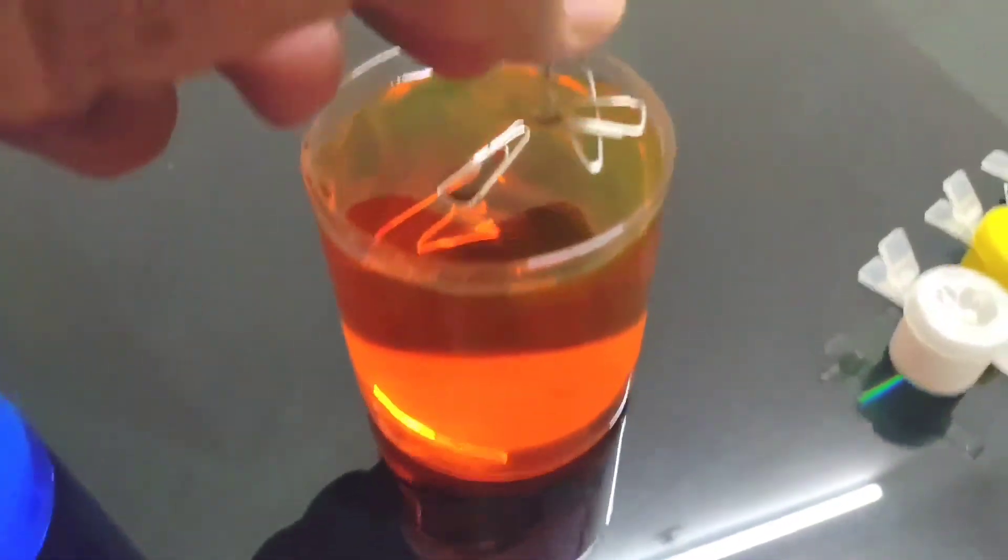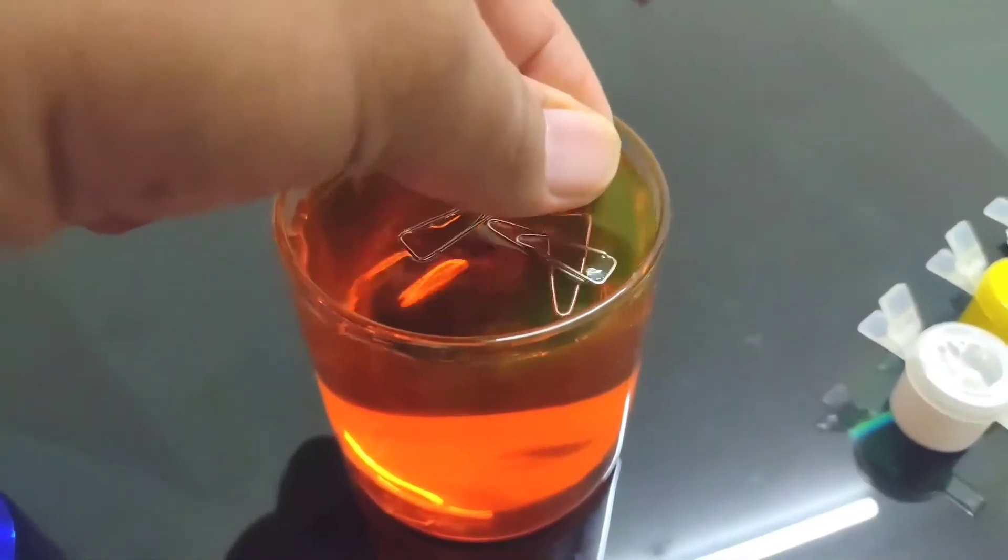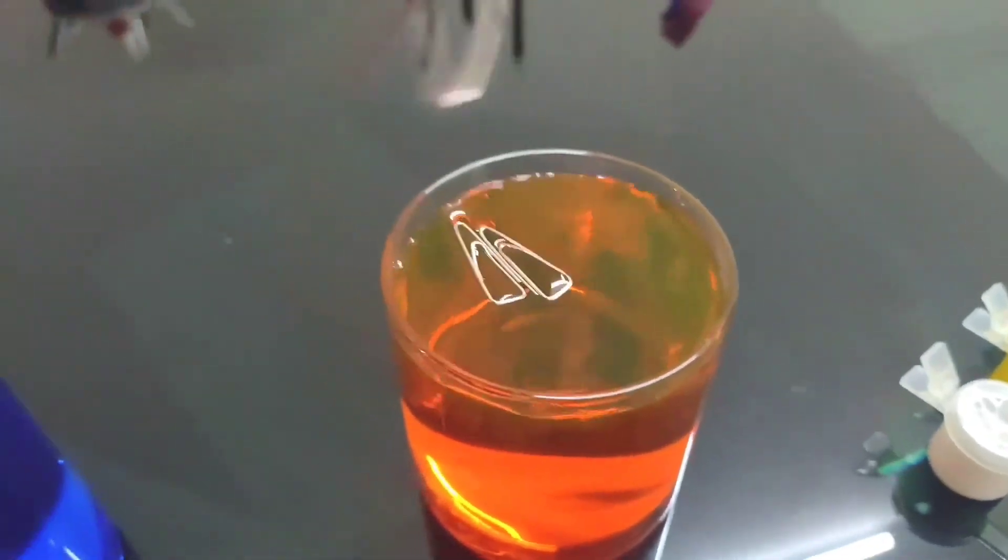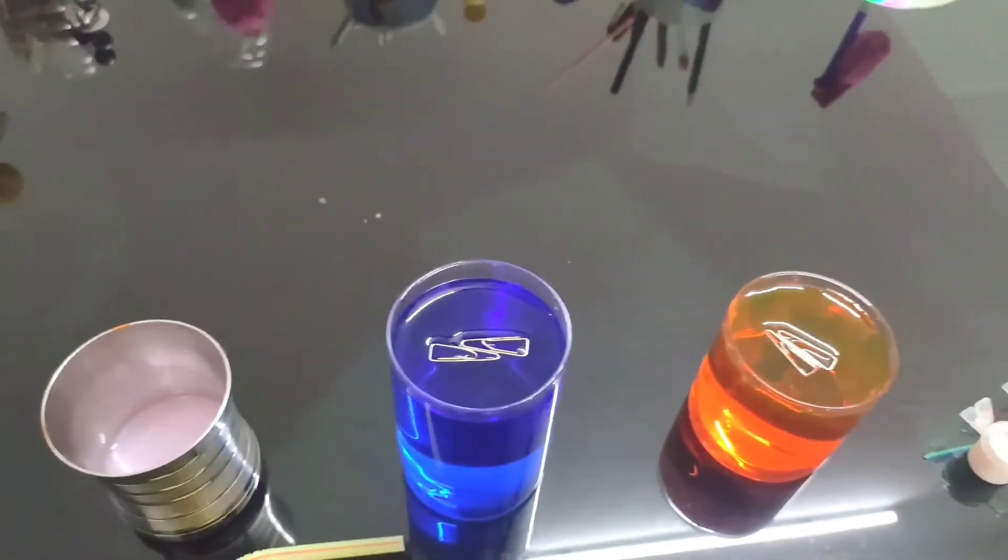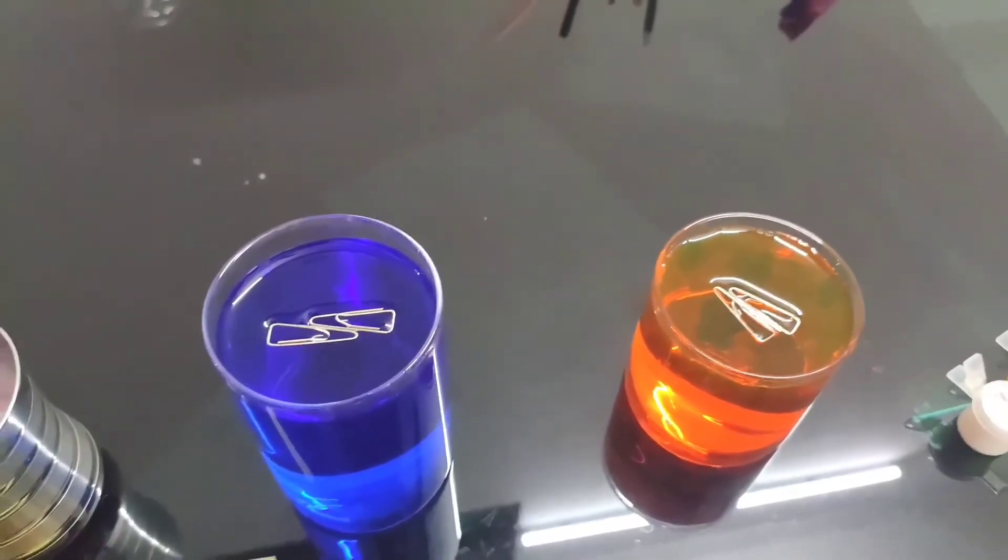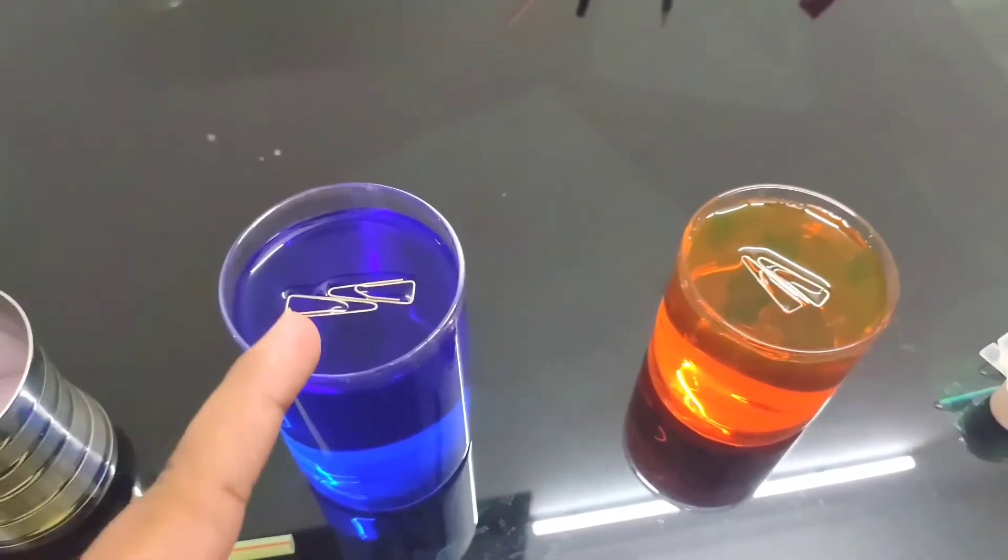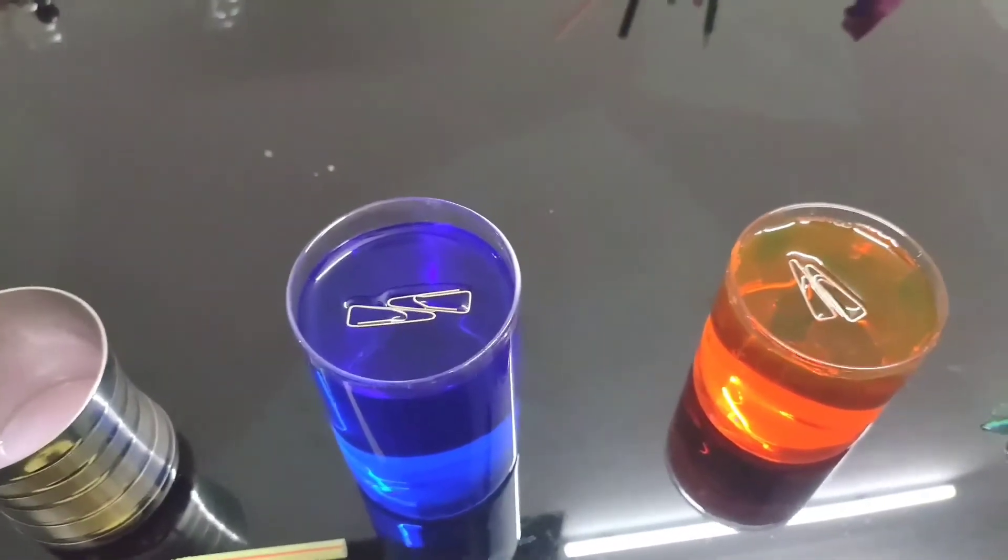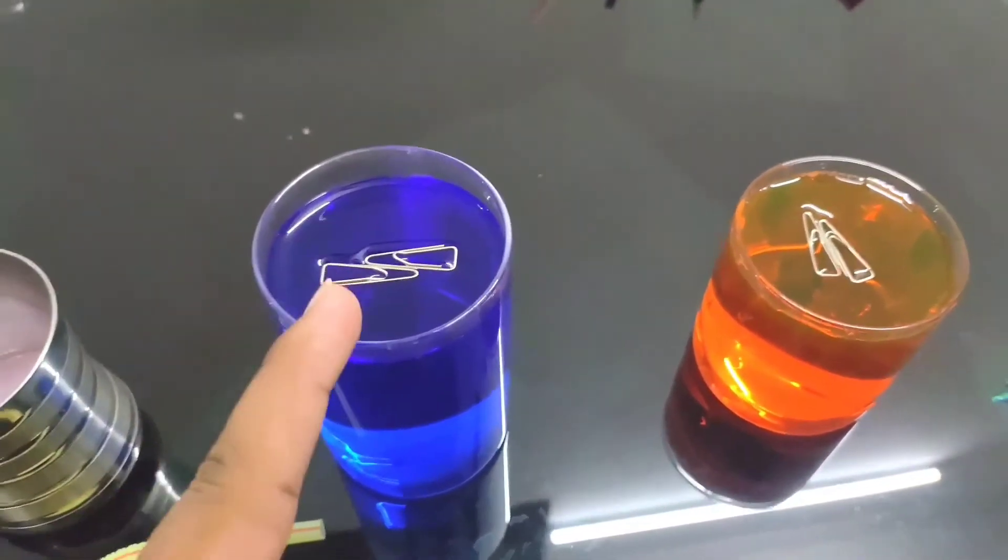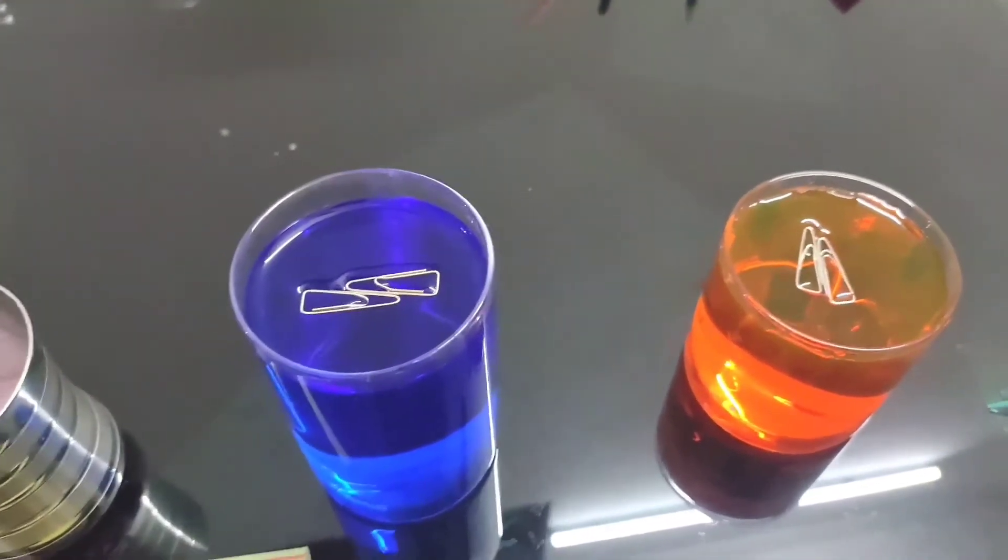How did this happen? You know that paper clips have high density, and because of high density they should sink. But if you look here and here, the paper clip is floating. Why does this happen? This happens due to high or higher surface tension.